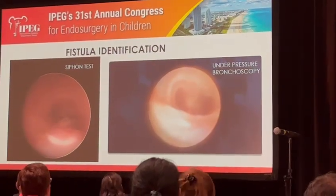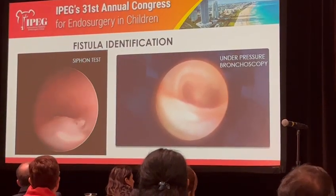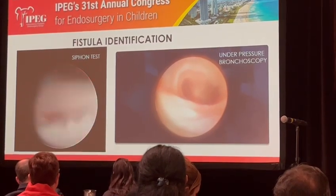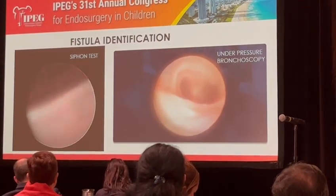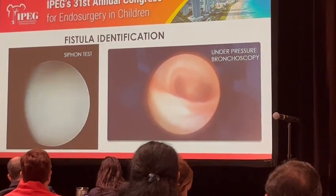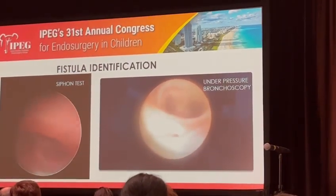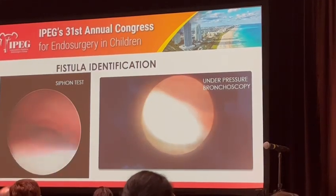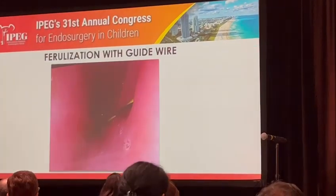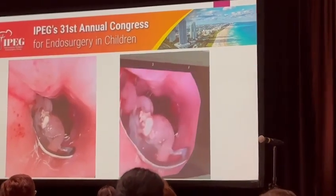Fistula identification: this is the way we identify the fistula — it's a formal test or under-pressure bronchoscopy. In the next video, bronchoscopy with pressure, we will look at a small fistula in the posterior wall of the trachea. This shows the scarification and application of TCA to it.